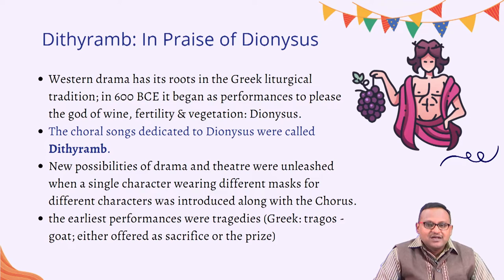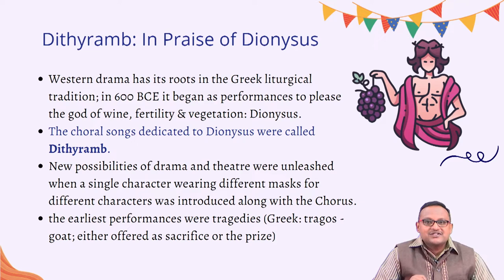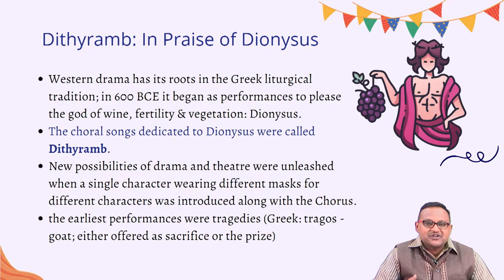Drama began with choral performances. The chorus is a group of singers who play various roles during performance. Drama begins as a choral song dedicated to praising Dionysus, and these choral songs were called dithyrambs. The genesis of western Greek drama lies in dithyrambs — they were the primitive versions of drama, and what we call full-fledged drama has its genesis there.